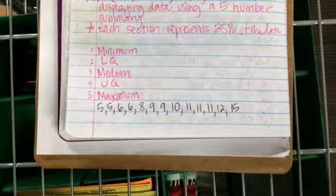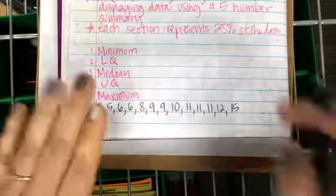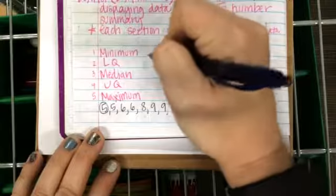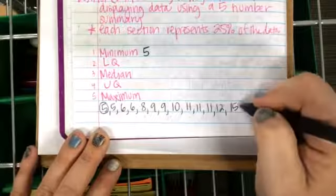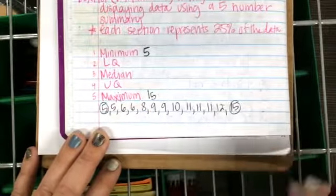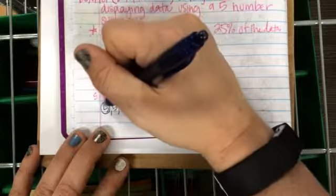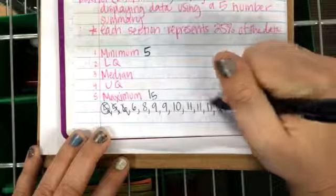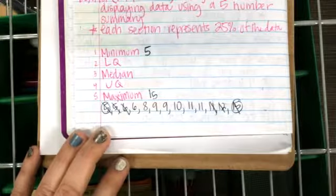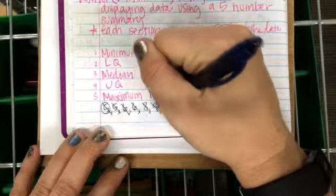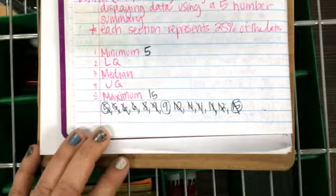Let's fill in the chart. Minimum is five, maximum is fifteen — those are easy to find. For the median, I'll cross out values three at a time from each end. After crossing out, the median is nine.